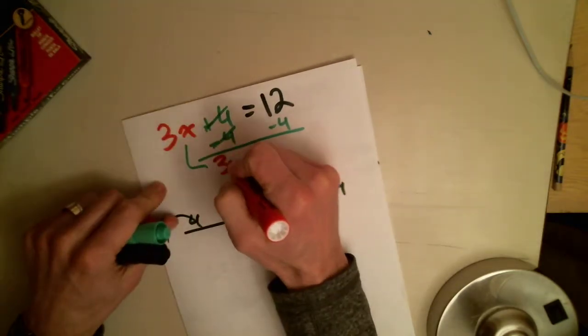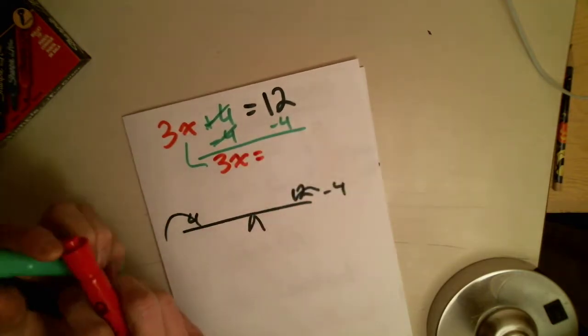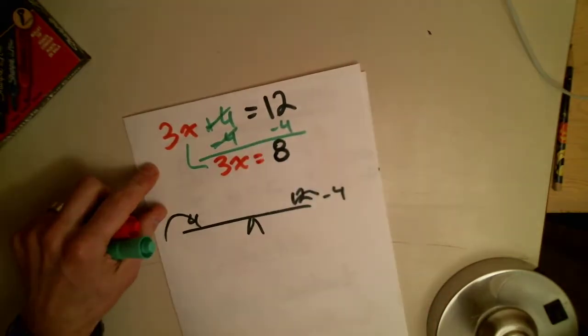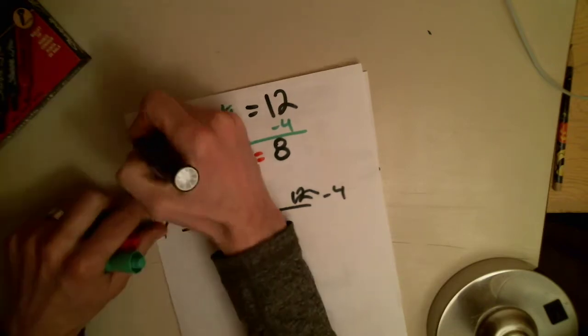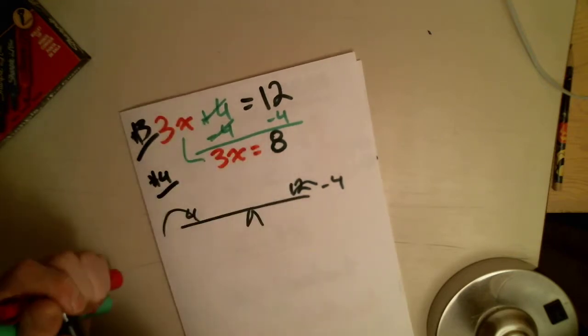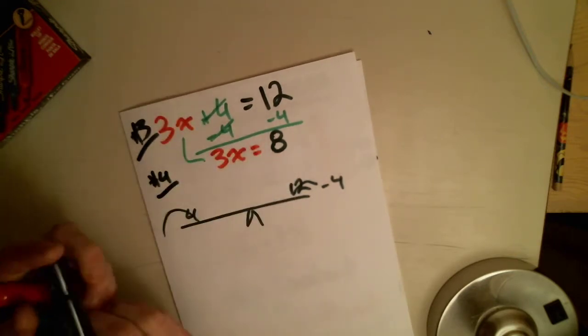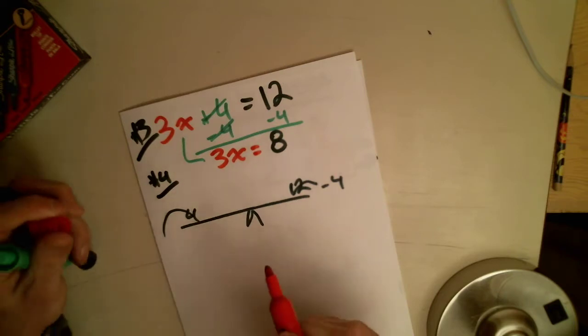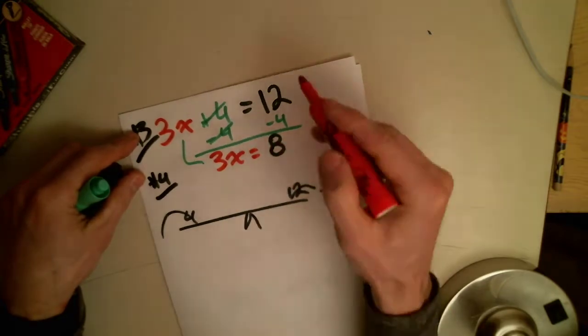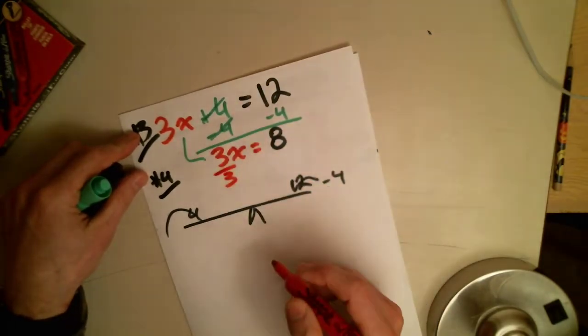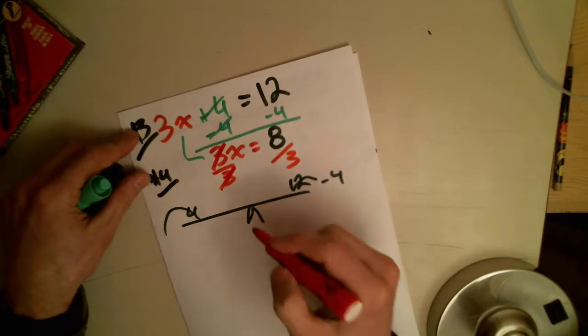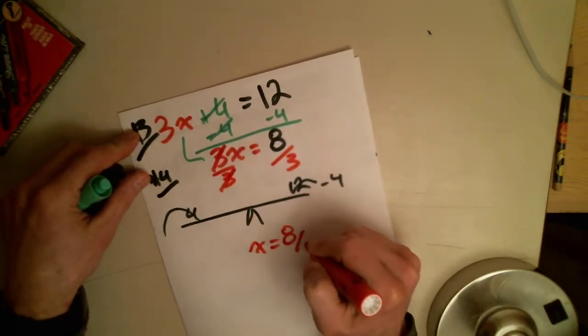I bring down my constant. That leaves me with 3x equals, well, what's 12 minus 4? It's 8. Awesome. That's step number 3. Right there. Step number 4. Get rid of the coefficient using division or multiplication. Now, which one are we going to use? The 3 is attached to the x with a multiplication. So what's the opposite of multiplication? Divide by 3. What I do to one side, I do to the other.